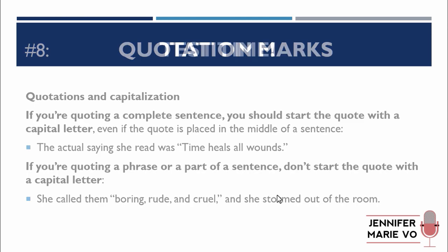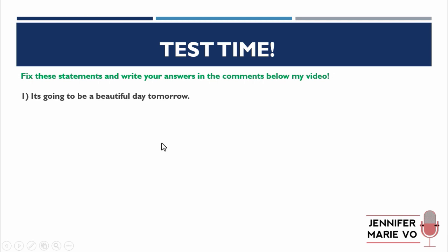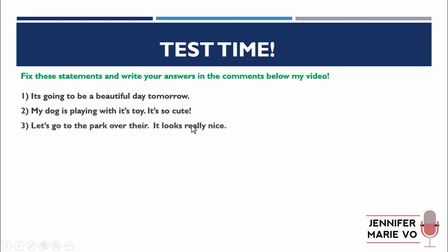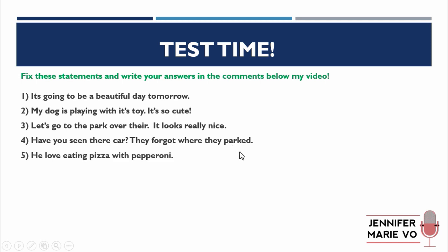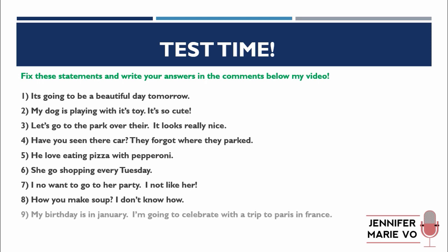Now we're going to do a little test based on everything we've just gone through. Fix these statements and write your answers in the comments below. Number one: it's going to be a beautiful day tomorrow. Two: my dog is playing with its toy — it's so cute. Three: let's go to the park over there — it looks really nice. Four: have you seen their car? They forgot where they parked. Five: he loved eating pizza with pepperoni. Six: she goes shopping every Tuesday. Seven: I no want to go to her party — I not like her. Eight: how you make soup? I don't know how. Nine: my birthday is in January — I'm going to celebrate with a trip to Paris, France. And ten: my best friend is Christian, but I am Catholic. Pause the video and answer in the comments if you'd like.